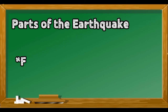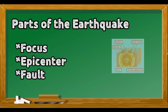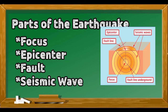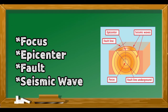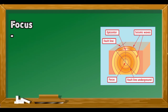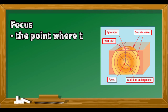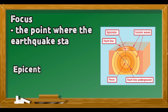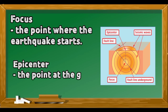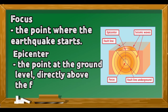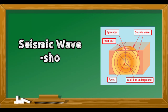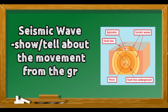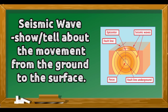Parts of the Earthquake: Focus, Epicenter, Fault, and Seismic Wave. The Focus is the point where the earthquake starts. The Epicenter is the point at the ground level directly above the focus. The Seismic Wave tells about the movement of the ground to the surface.